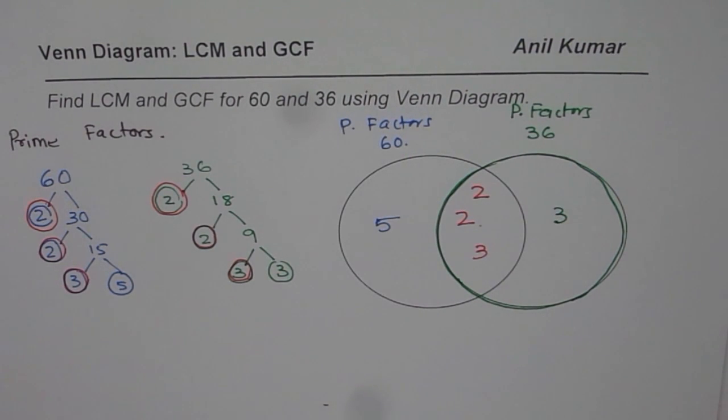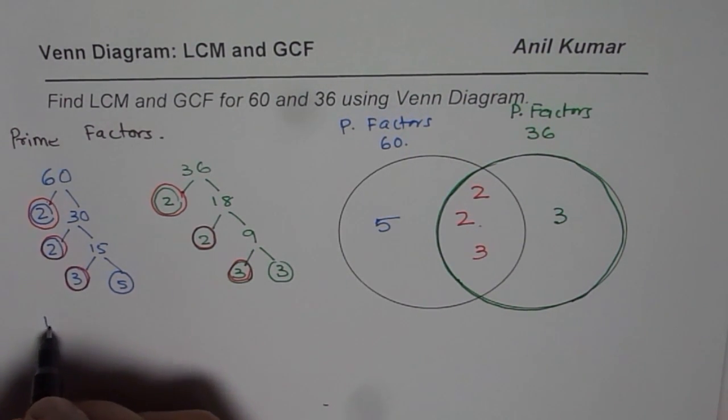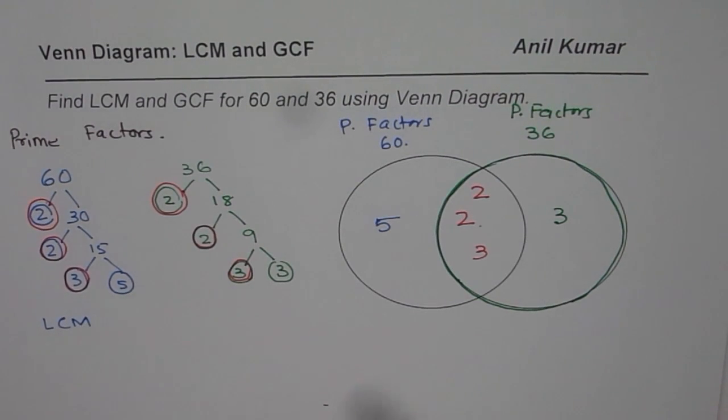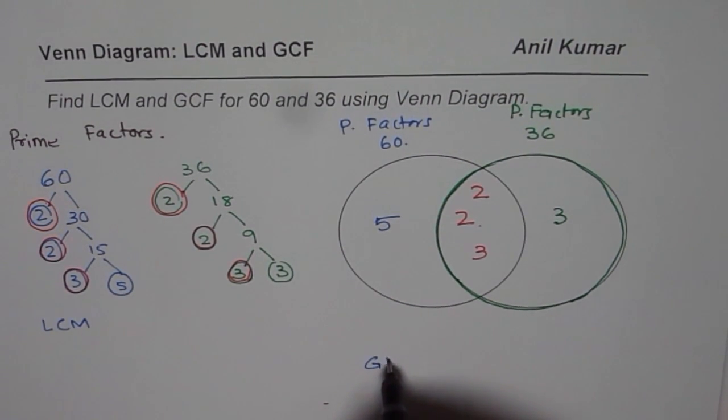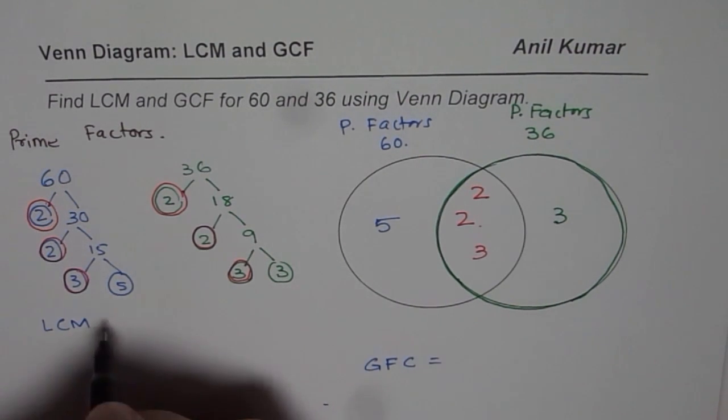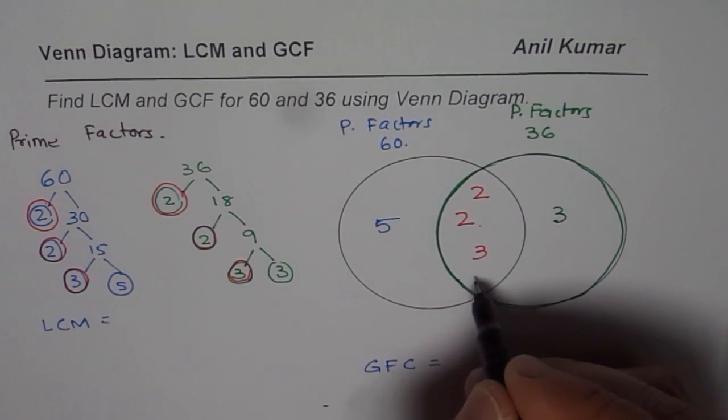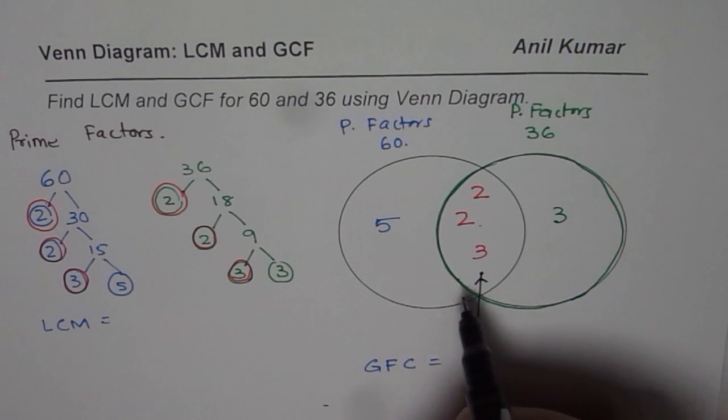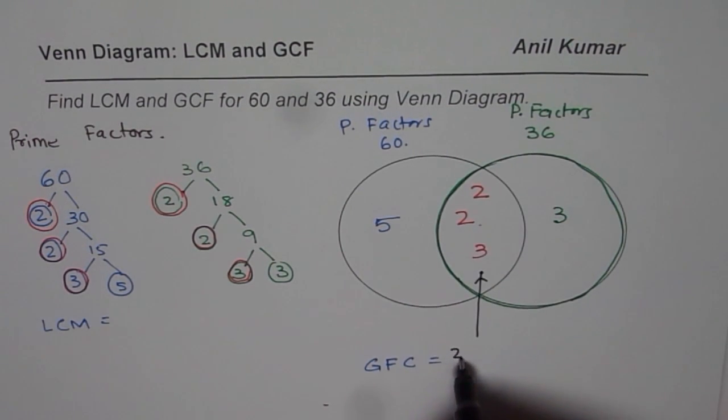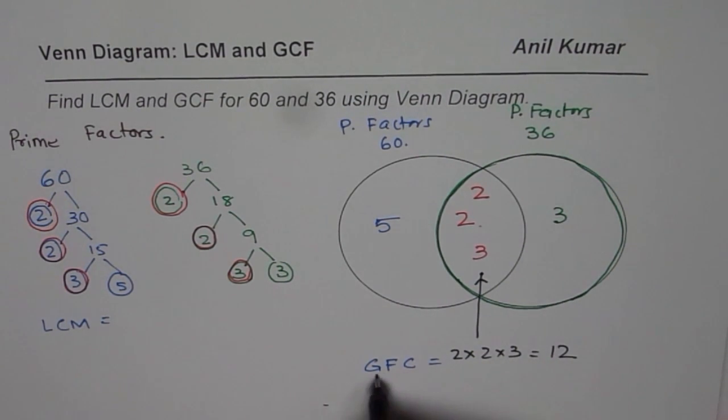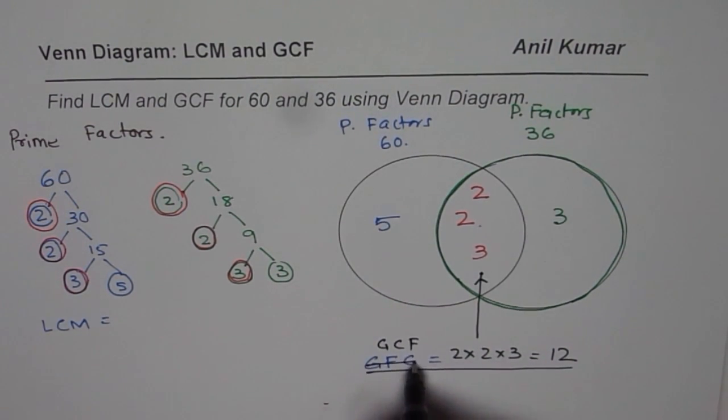Now we need to find LCM, lowest common multiple and we have to find greatest common factor. You can still pause the video, write down your answer and then check with my solution. Greatest common factor comes from here. Multiply them all. So we do 2 times 2 times 3, 4 times 3 is 12. So that is our greatest common factor.